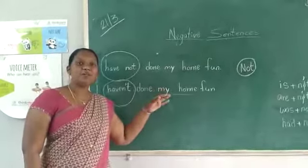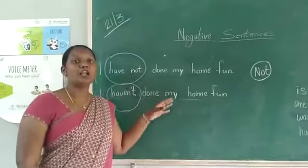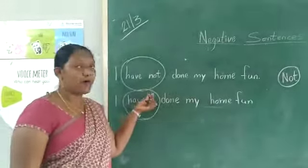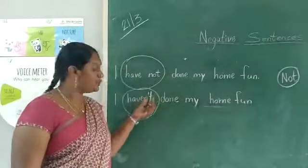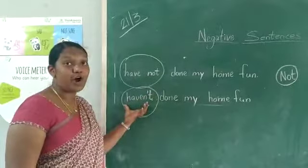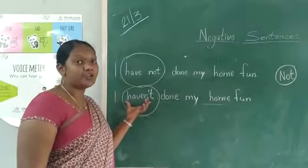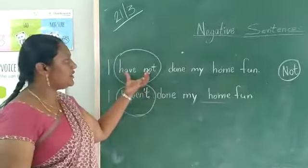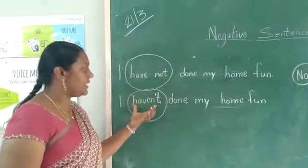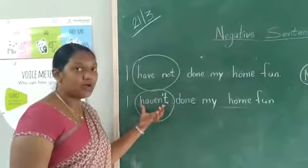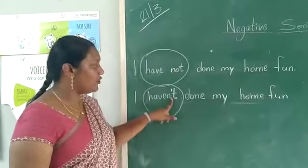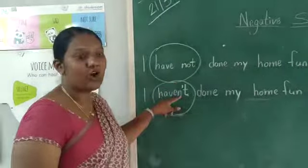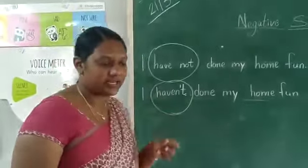So what is it called? It is called contractions. We are adding an apostrophe to make it short. We removed the 'o' and we put an apostrophe. This is called contractions.